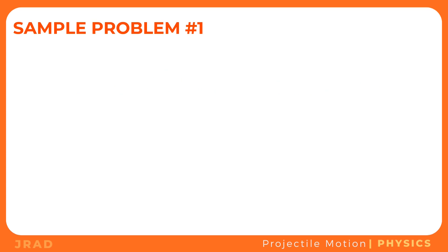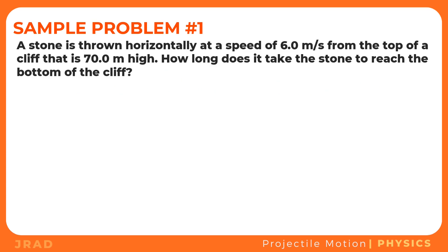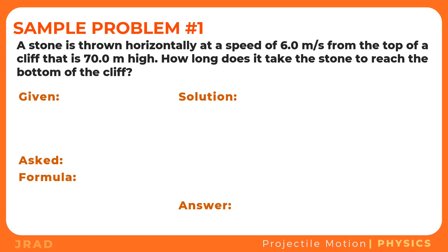Let's try this example. A stone is thrown horizontally at a speed of 6 meters per second from the top of a cliff that is 70 meters high. How long does it take the stone to reach the bottom of the cliff? Using the GRESA method, we first identify the given: initial velocity along x equals 6 m/s, height equals negative 70 meters, and acceleration due to gravity equals negative 9.8 m/s². The height and gravity are negative due to the projectile's downward direction, and since the object is thrown horizontally, the initial velocity along y is zero.